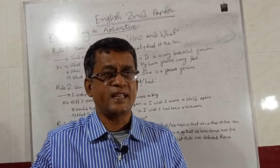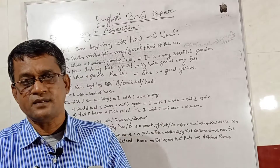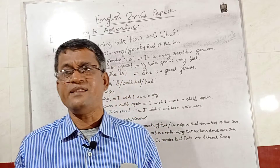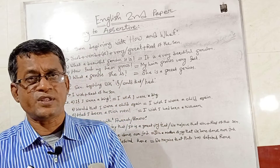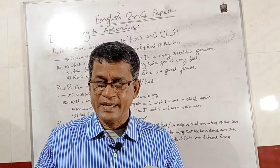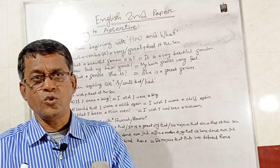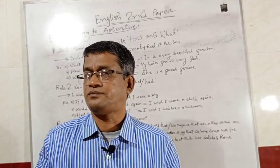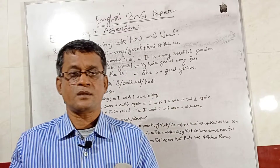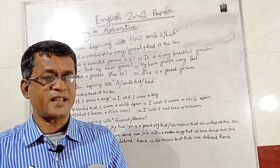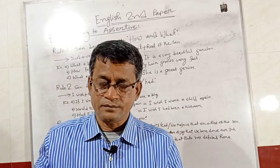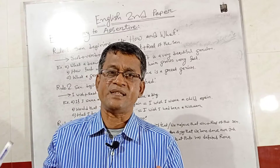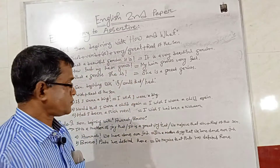So I think the point is clear. First, we write the subject, then the verb, then A — only if there is A or AN in the sentence. Then we use 'very' if there is an adjective, and 'great' if there is a noun. Then the rest of the sentence.